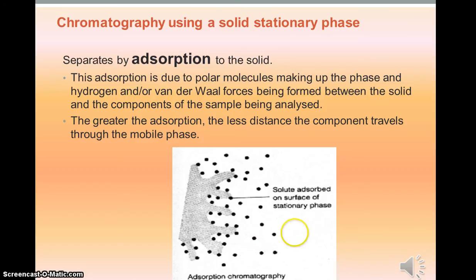Chromatography using a solid stationary phase, and this is thin layer chromatography and also some forms of gas chromatography, the mixture is separated by adsorption. That's not absorption, but adsorption, where the molecules adsorb onto the surface of the stationary phase. Depending on the strength of that adsorption, molecules get held back for a shorter or longer time. Molecules that don't adsorb very well pass through the stationary phase quite quickly.